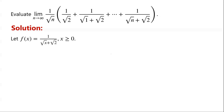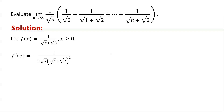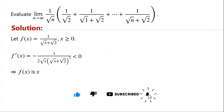To check the function's monotonicity, we calculate the first derivative of f of x. f dash of x equals negative 1 over 2 root x, times root x plus root 2, all squared. Clearly this is less than 0, so f of x is strictly decreasing.